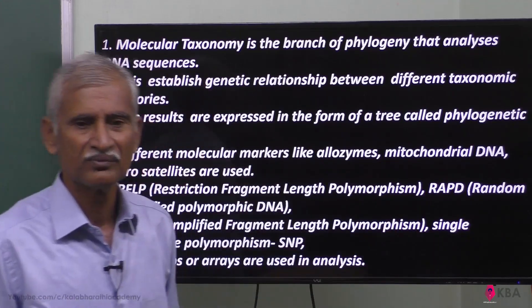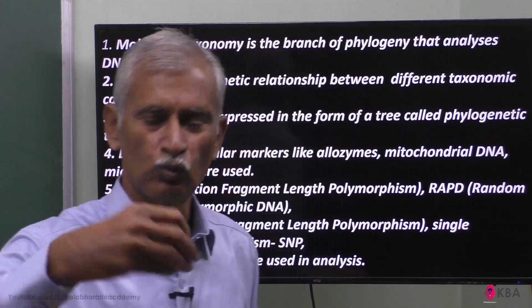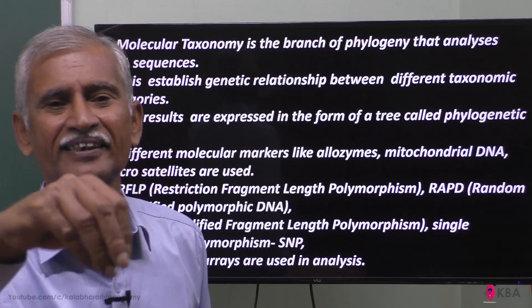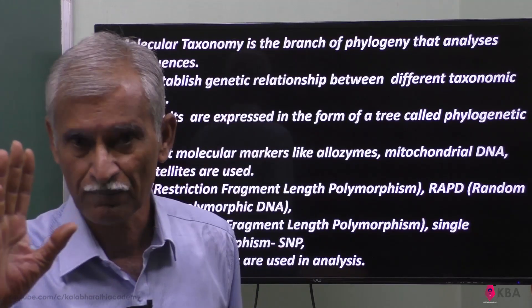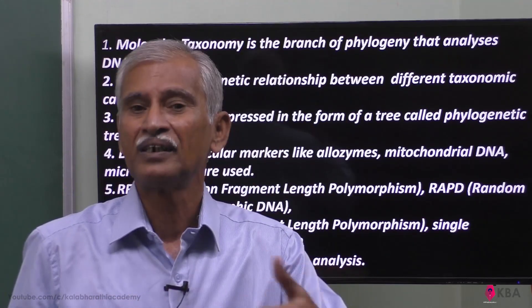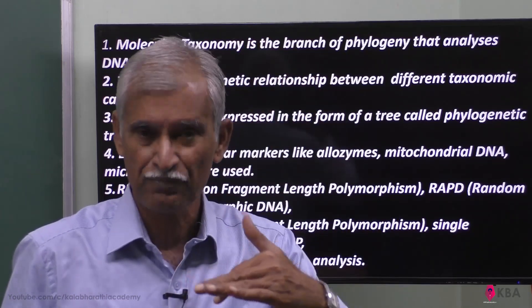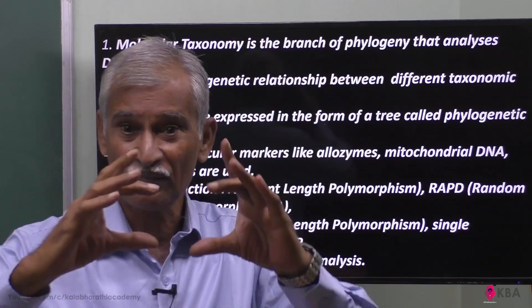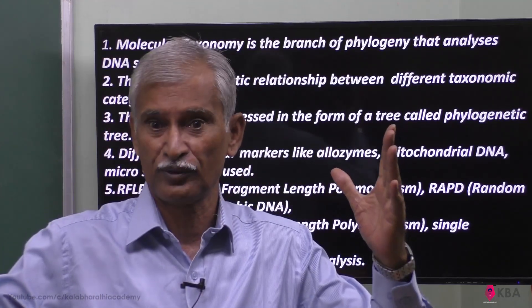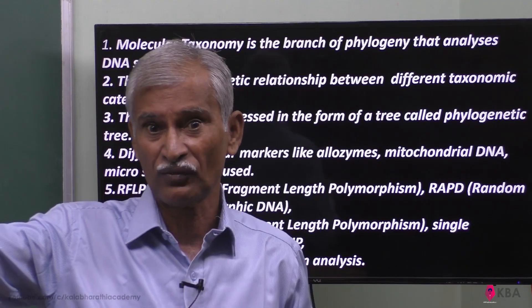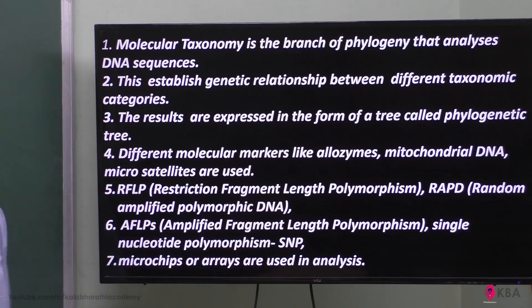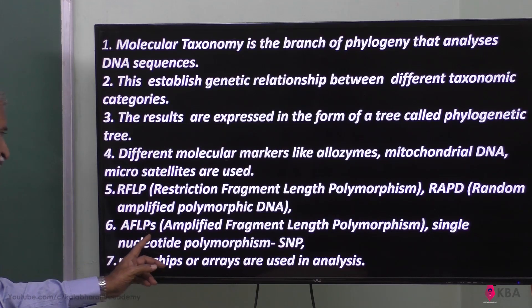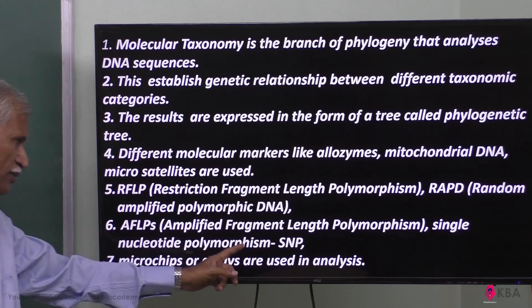Another method involves random cutting of DNA. You can amplify the fragments by increasing the temperature and using systematic methods. A few fragments are amplified into thousands or ten thousand fragments — that is amplification. This method is called RAPD — Random Amplified Polymorphic DNA. Another method is AFLP — Amplified Fragment Length Polymorphism. There is also SNP — Single Nucleotide Polymorphism.